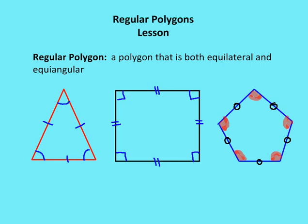I have a triangle, a square, and a pentagon. A regular triangle is an equilateral, equiangular triangle. A regular quadrilateral is a square, and then there's a regular pentagon. In all these cases, by definition, the polygon has sides that are congruent, and the angles are congruent as well. That's the definition of a regular polygon.